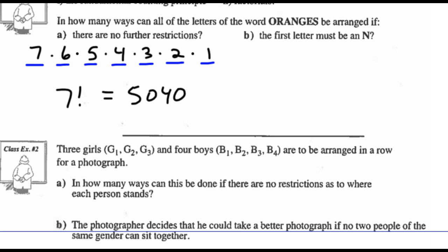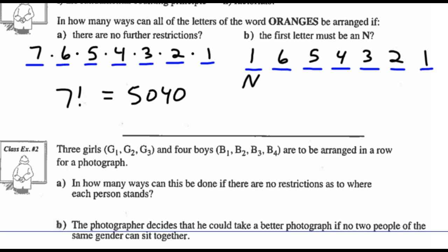Part B says the first letter must be an N. We still have 7 spots, but the first letter must be N — there's only one way N can fit there. Then we've got 6 letters to choose from, then 5, 4, 3, 2, 1. So the fundamental counting principle gives us 1 × 6! In factorial notation, there's only one way to put N there, times 6 factorial. That's 720 possible arrangements.